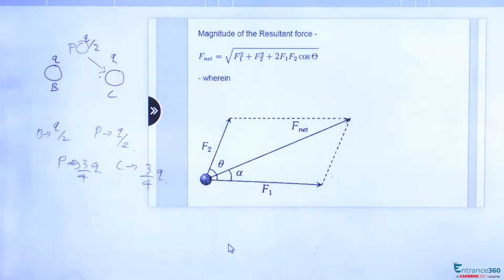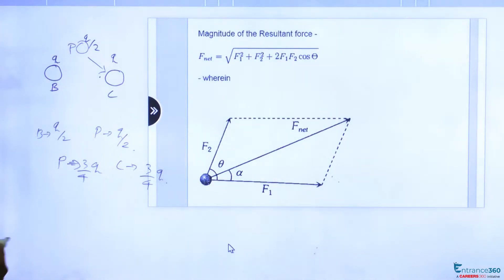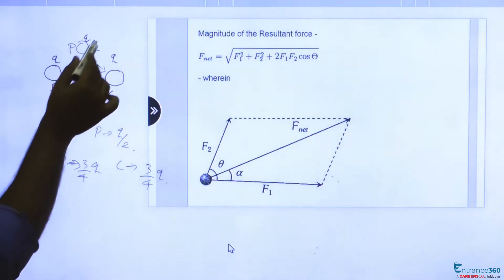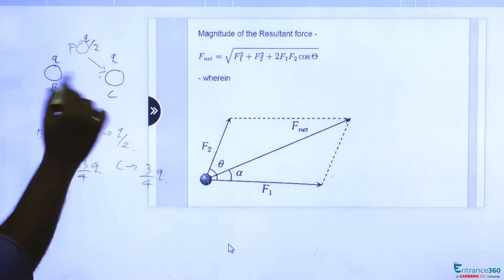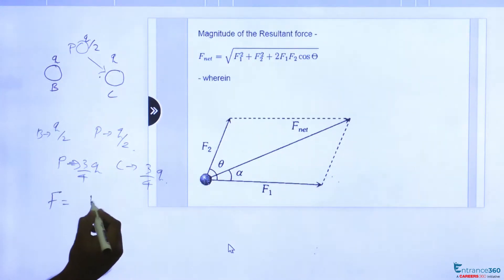Now new charge of B is Q by 2 and C is 3 by 4Q. So before third body come in contact with this system, the force will be F equals KQ square by R square.